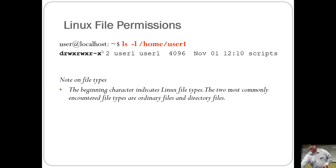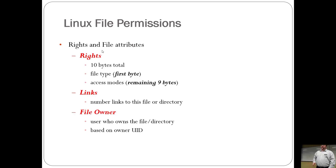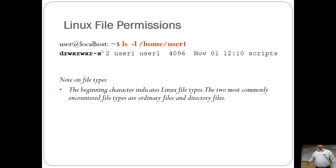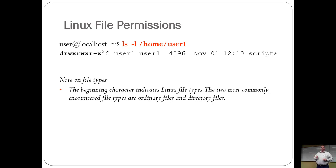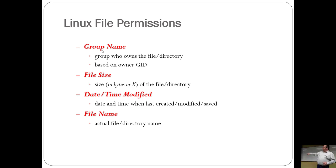In the ls -l output, the number next to the permissions is the number of links — that's the number of other file system entries that point to that file or folder. The next one is the file owner, then the group. After that comes the file size, then the last modified date, then the file name. So those are the rest of the items in that list.